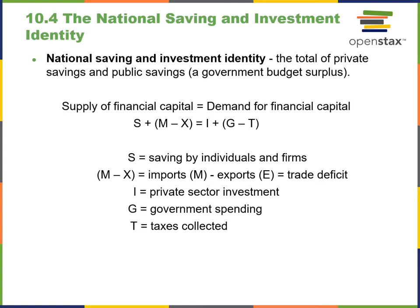Here we have a formula you'll likely see on a test about national savings and investment identity. It covers total private savings and public savings — or a government budget surplus. The supply of financial capital equals the demand for financial capital. The formula includes savings by individuals added to either imports or exports, individual private sector investment, and government spending minus taxes collected.